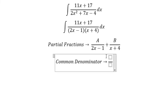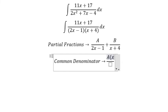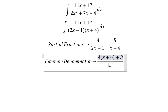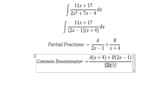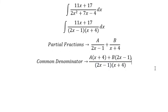So we got A multiplied with x plus 4 and B multiplied with 2x minus 1. Now we need to arrange based on the power of x.